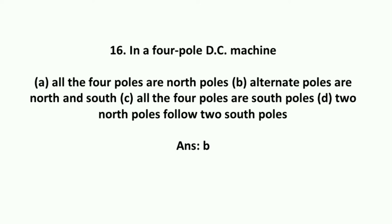In a four-pole DC machine, alternate poles are north and south.